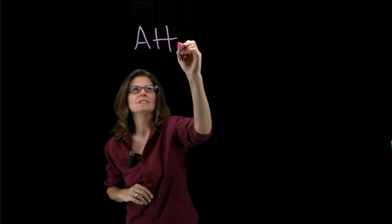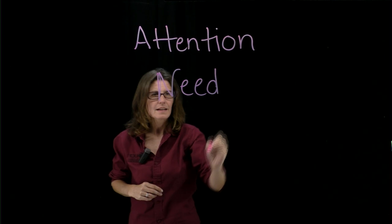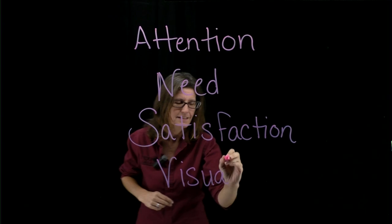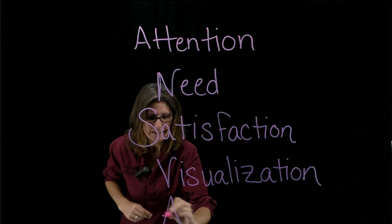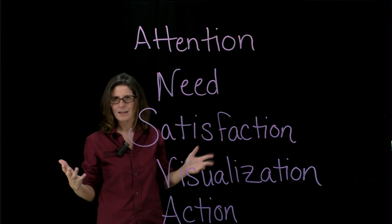The first step of Monroe's Motivated Sequence is the attention step, and the attention step is basically an introduction. The second step is the need step. The third is the satisfaction step. The fourth is the visualization step. And last but certainly not least is the action step — sometimes referred to as the call to action. The attention step is similar to what we've seen before: it's basically an introduction.